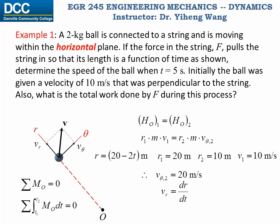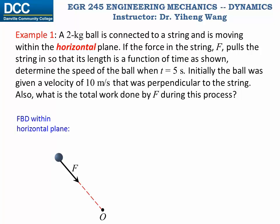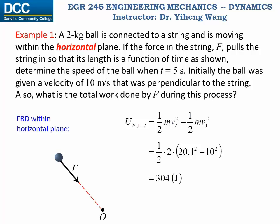The radial velocity equals dr/dt. Since the function of r is given, dr/dt = −2 m/s, which is constant. The negative sign indicates the velocity along the radial direction points toward O. The magnitude of the total velocity at t = 5 seconds is therefore √(vθ2² + vr²) ≈ 20.1 m/s, answering the first part. For the second part, since motion is only in the horizontal plane, force F is the only force doing work. Applying the principle of work and energy with the particle's mass and initial and final speeds, the total work done by F is 304 J.